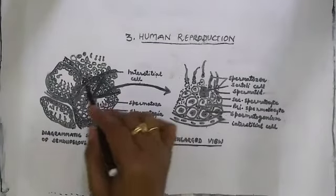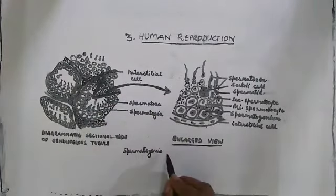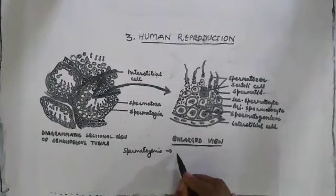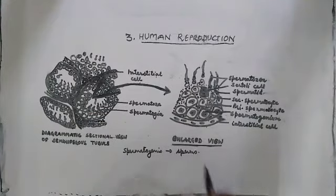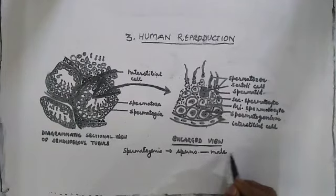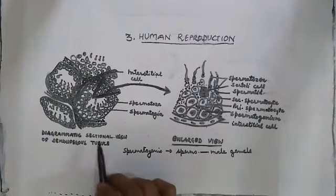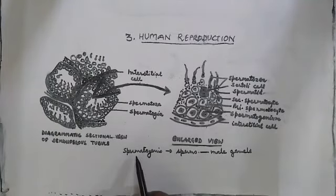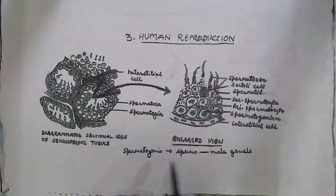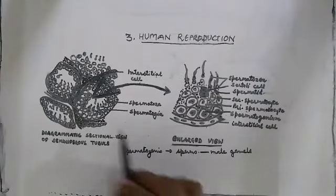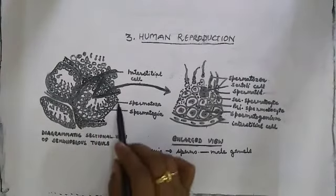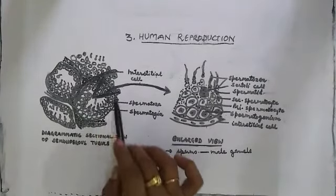Spermatogenesis is performed in the seminiferous tubule. Spermatogenesis is the making of sperms. Sperms are the male gamete, and spermatogenesis or the making of sperms takes place inside the seminiferous tubule.